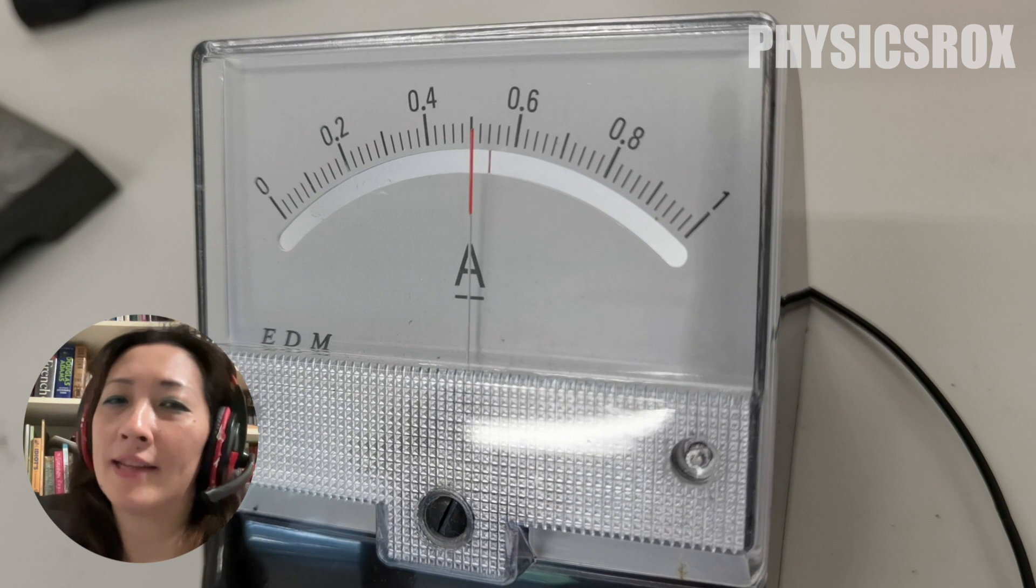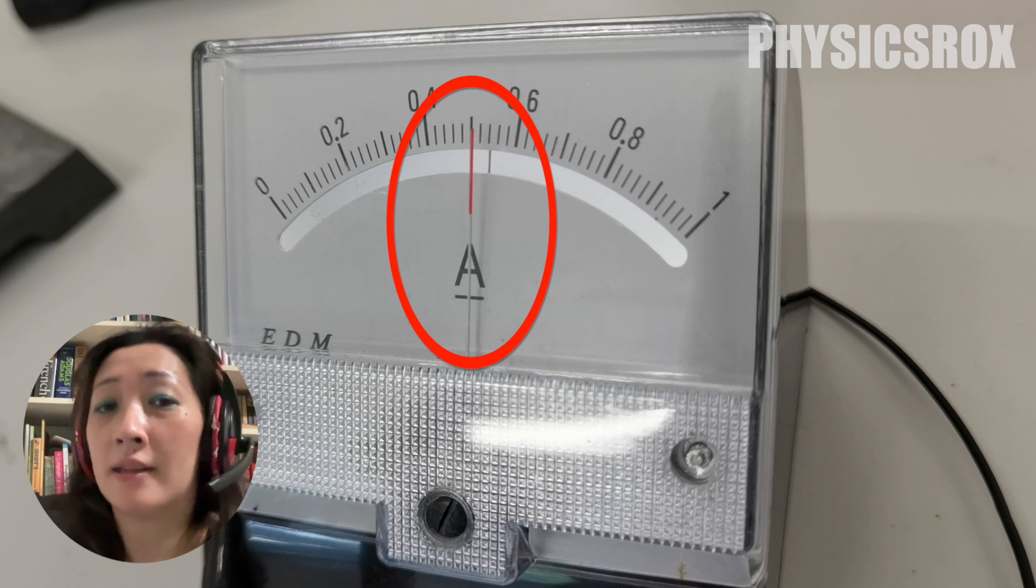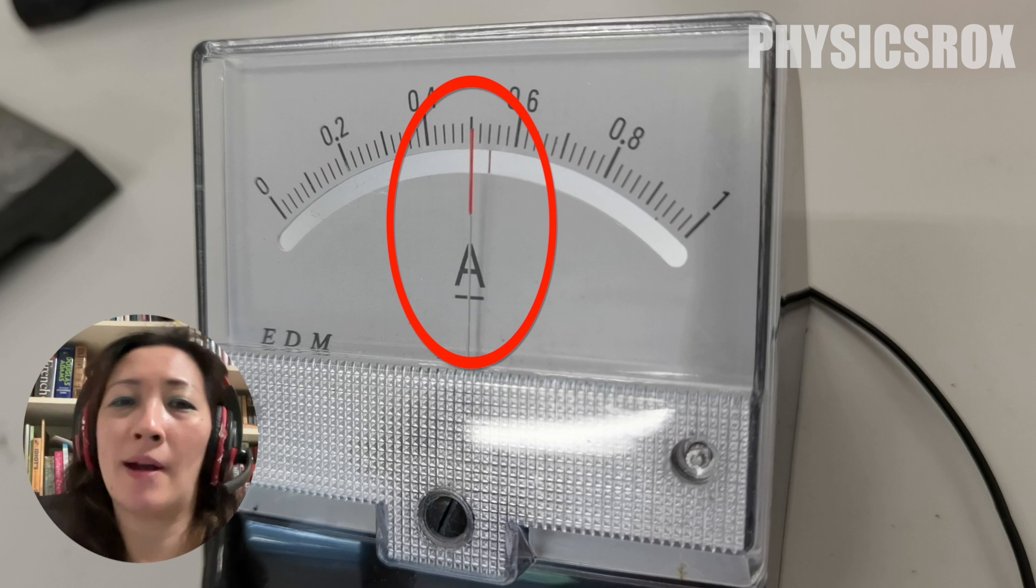we're not looking at the scale perpendicularly anymore. You can see that the needle does not overlap its own reflection. You can see the reflection of the needle right there in the anti-parallax mirror.